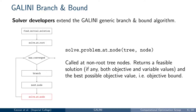Finally, you need to implement a method that is called to solve each one of the non-root branch and bound nodes. Similar to the method for the root node, you should return a feasible solution objective and point, if any, together with the best possible objective value.